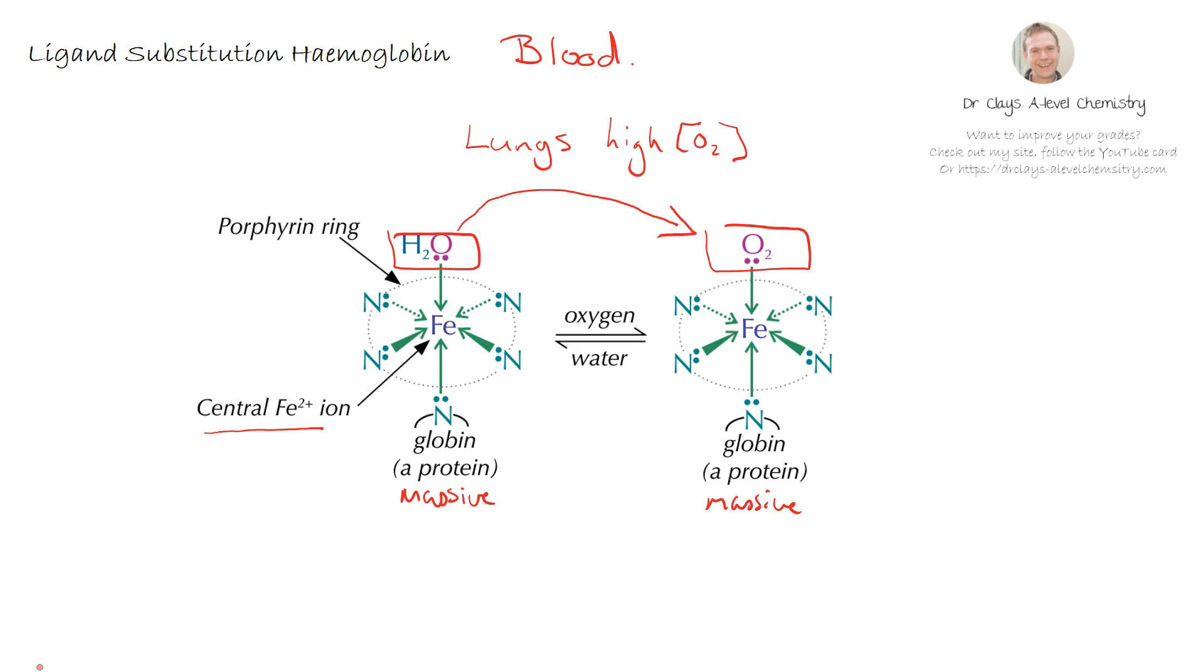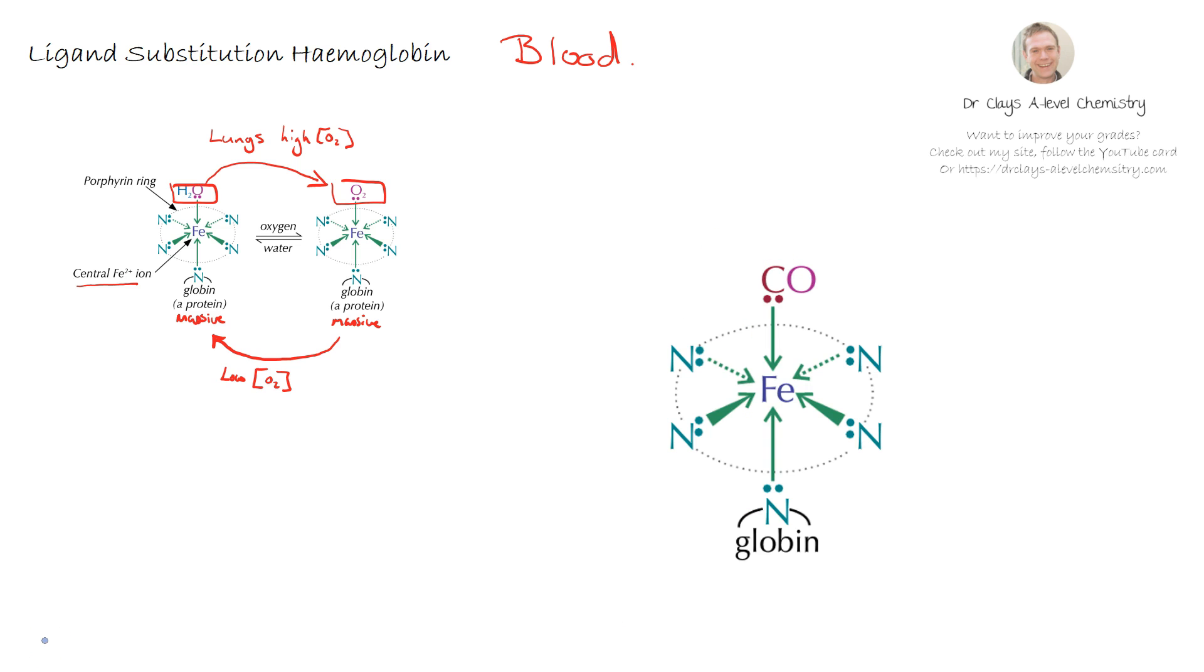The haemoglobin then moves around the bloodstream to wherever it is required and then what we observe is whenever we get to the point at which oxygen is required to be used. We then see the reverse because we have got a low concentration of oxygen and we observe the ligand substitution here from oxygen back to water. This all works fine as long as there is no carbon monoxide present.